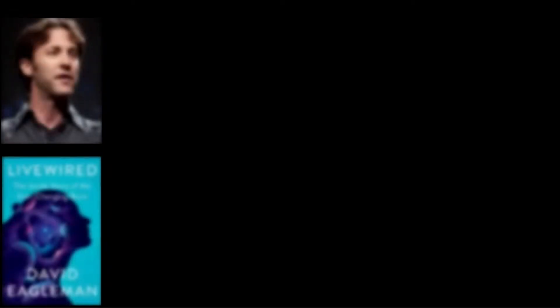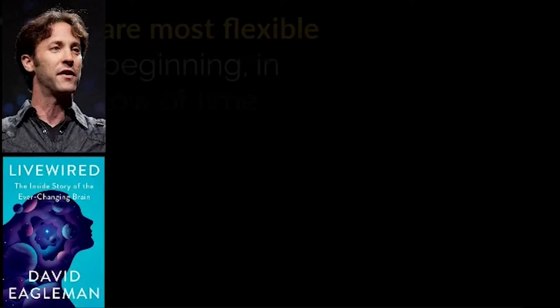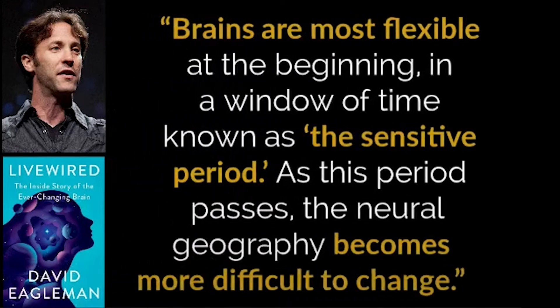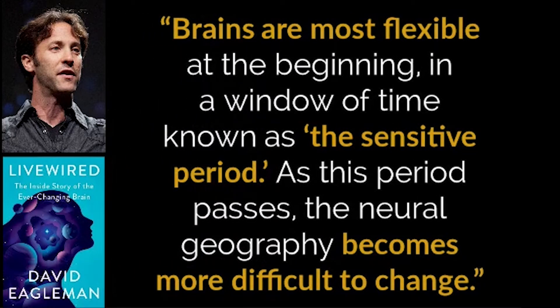In his 2020 book Live Wired, Stanford neuroscientist David Eagleman notes that "brains are most flexible at the beginning, in a window of time known as the sensitive period. As this period passes, the neural geography becomes more difficult to change." The exact timing of that developmental course differs based on which area of the brain we're talking about.